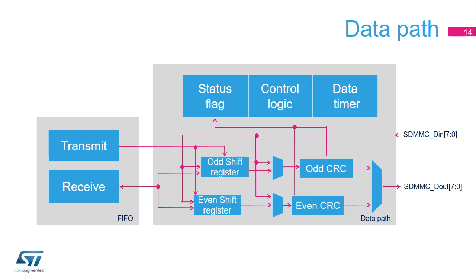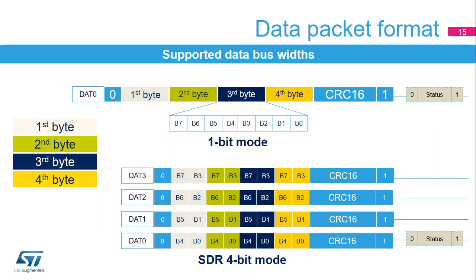The CRC calculator guarantees data integrity between the card and host. At the end of the data packet, the CRC is calculated automatically. In single data rate (SDR) mode, depending on the configured data bus width, the data path sends data blocks over 1 pin (SDMMC D0), 4 pins (SDMMC D0 to SDMMC D3), or 8 pins (SDMMC D0 to SDMMC D7). First, a start bit is generated on the bus, followed by the data packet with the first-to-last bytes of the sequence. Then the CRC16 and end bit are appended to the data packet on the bus line.